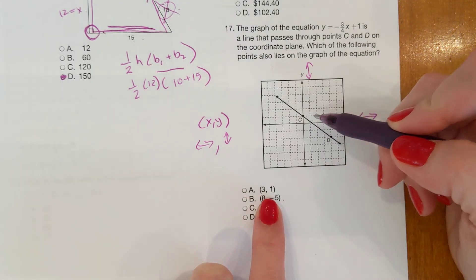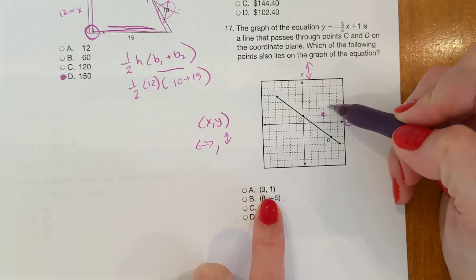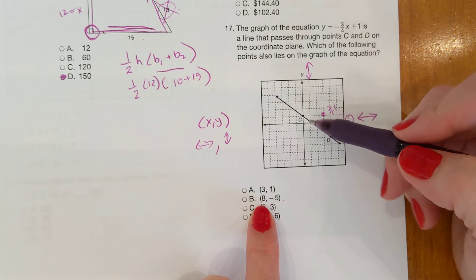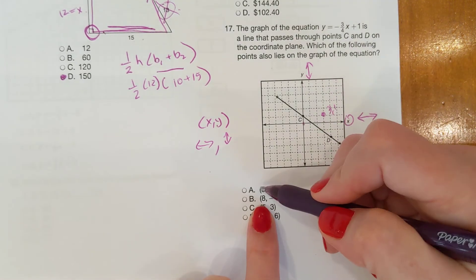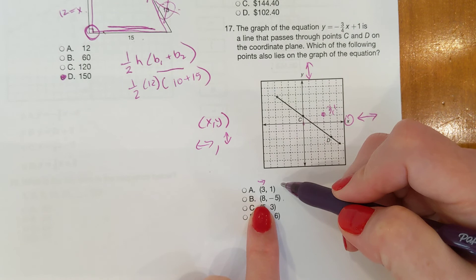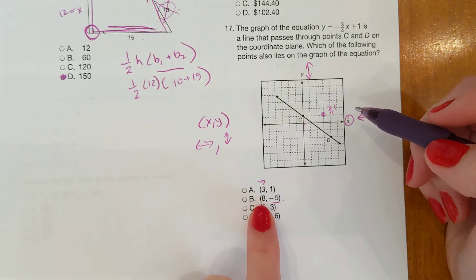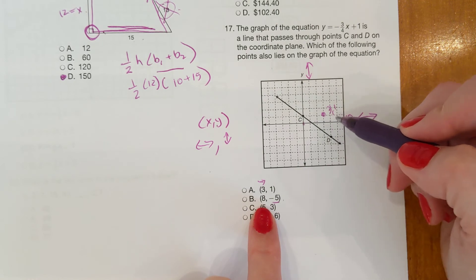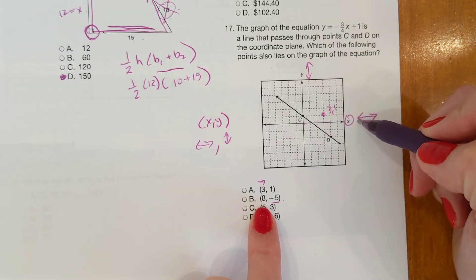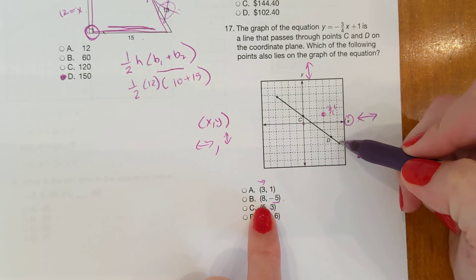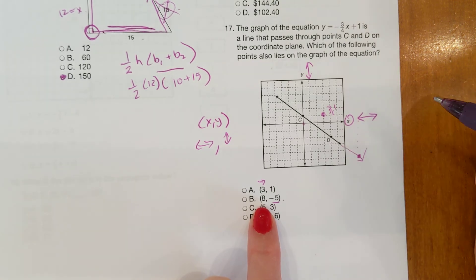It's three, one. So from zero, you count three to the right. One, two, three and go up one. So that's three, one. That is not on the line. Next up, eight, negative five. So from zero, count right because you go right first. It's positive. So you're going to go right. And then it's negative. So you go down. So right eight. One, two, three, four, five, six, seven, eight. And then down five. One, two, three, four, five. Yes, it goes off the graph a little bit. It looks like that's probably our answer.